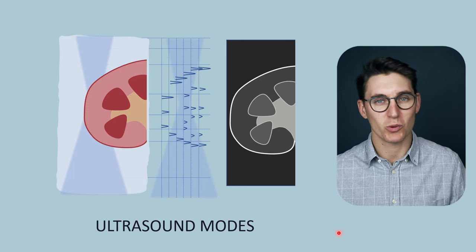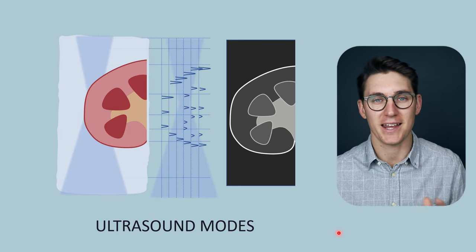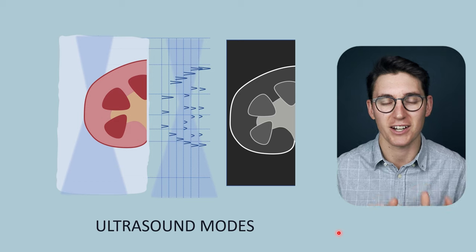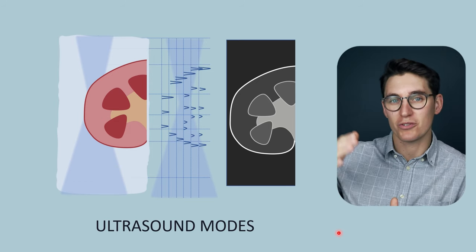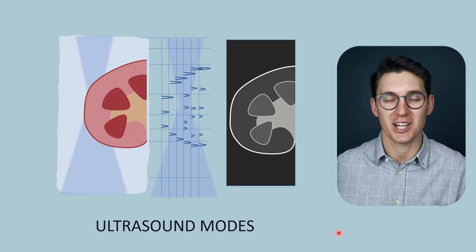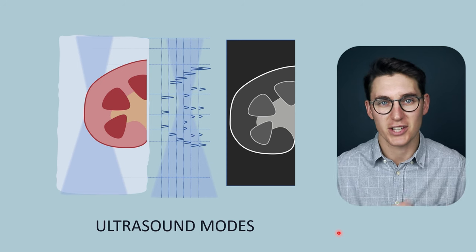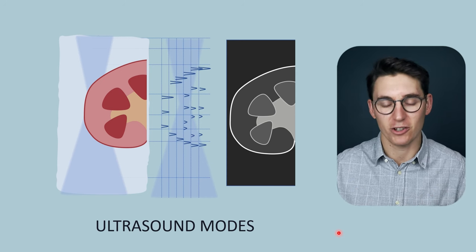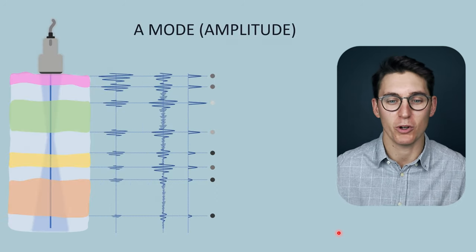In this talk we're going to be looking at the A, B, and M modes in ultrasound scanning, and we'll reserve Doppler scanning for a whole section coming up in the future. So let's start by having a look at the most simplest form, the A mode.